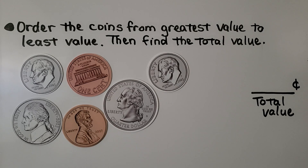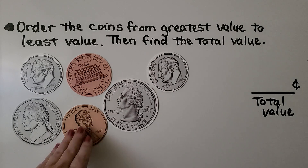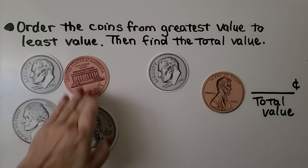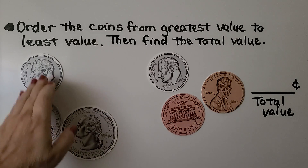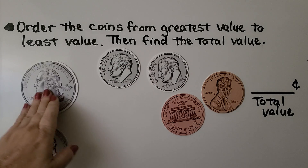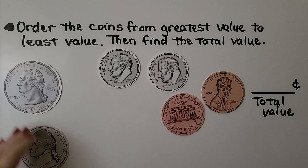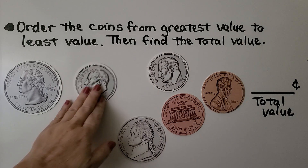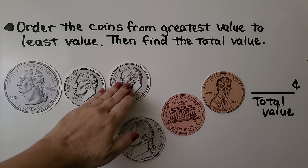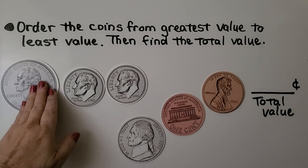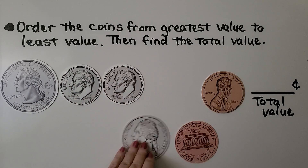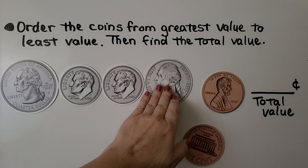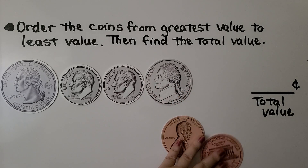Here it's telling us to order the coins from greatest value to least value, then find the total value. To order them from greatest to least, we know pennies are the least, so we can put the pennies over here. We know the quarter — that's 25 cents — that's the greatest. We have a nickel that's 5, and two dimes at 10 each. So we have 25, 10, 10, then 5, and then 2 pennies — those are the least.